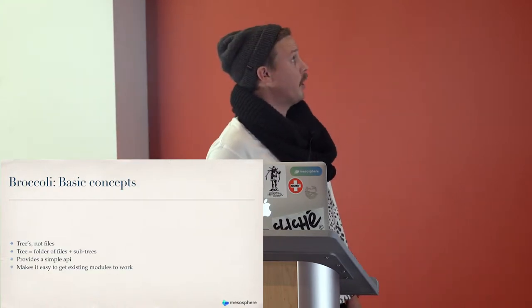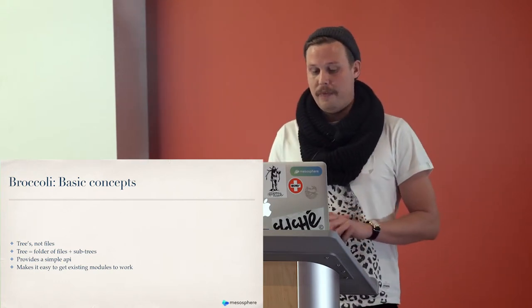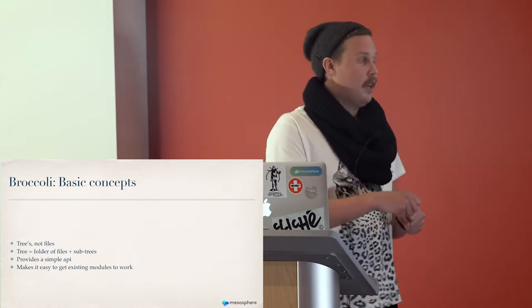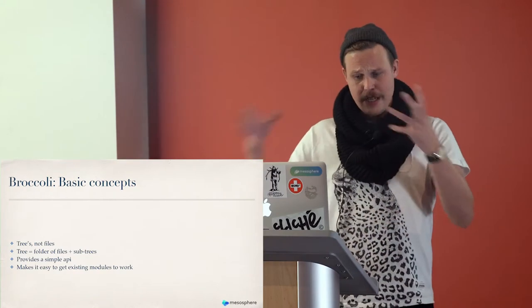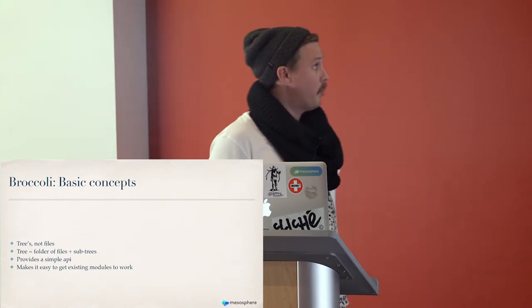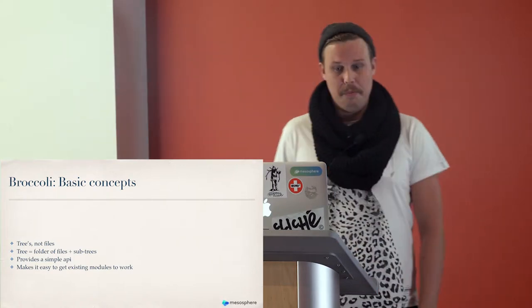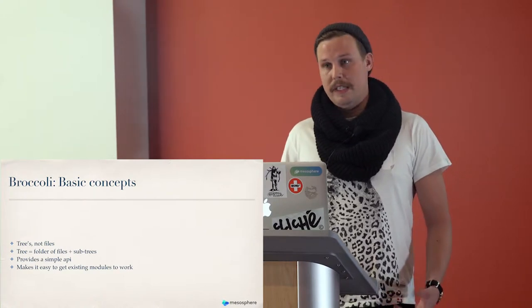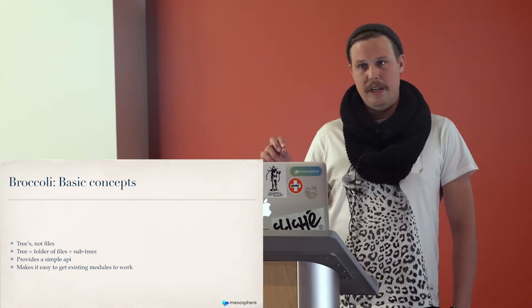How does Broccoli work? Its main thing is trees — it works on trees and not files. A tree is a folder of files, and additionally sub-trees, which are again folders of files with sub-trees — that's how the tree structure is built. It provides a simple API to wrap around existing modules that make stuff like webpack just work really easily. The webpack component is like 30 lines of code — it's just a wrapper.